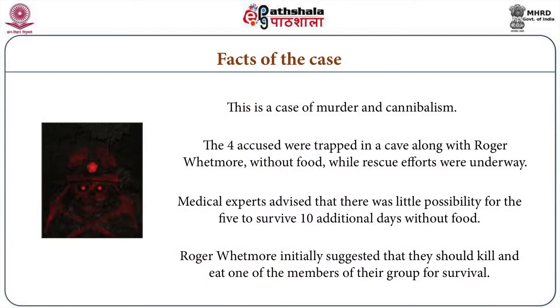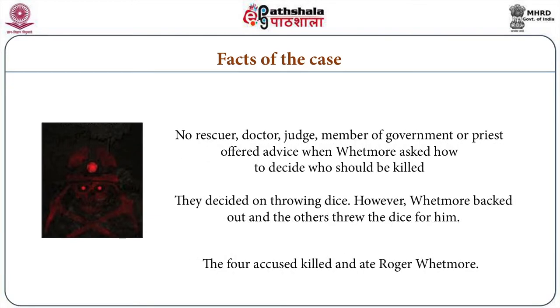These five explorers were trapped. They had no food. They were in the process of being rescued, and in that process they could communicate with people in the outside world but were not free to get out. Medical experts advised that there was little possibility for the five to survive an additional 10 days without food. Roger Wetmore initially suggested that they should kill and eat one of the members of the group in order to survive. No rescuer, no doctor, judge, member of government, or priest — all of whom could speak with the members of the explorer group trapped in the cave — none of them offered advice.